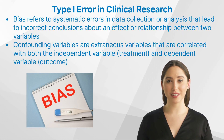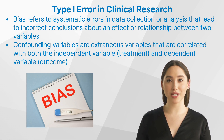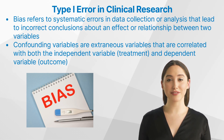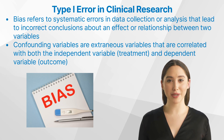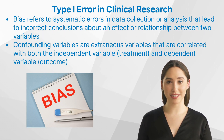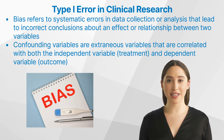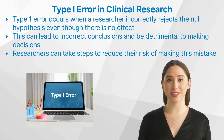It is also important for researchers to understand bias and confounding variables when conducting clinical research studies. Bias refers to systematic errors in data collection or analysis that lead to incorrect conclusions about an effect or relationship between two variables. Confounding variables are extraneous variables correlated with both the independent variable — the variable being manipulated — and the dependent variable — the variable being measured. Understanding these concepts can help researchers identify potential issues that may lead to a type 1 error.